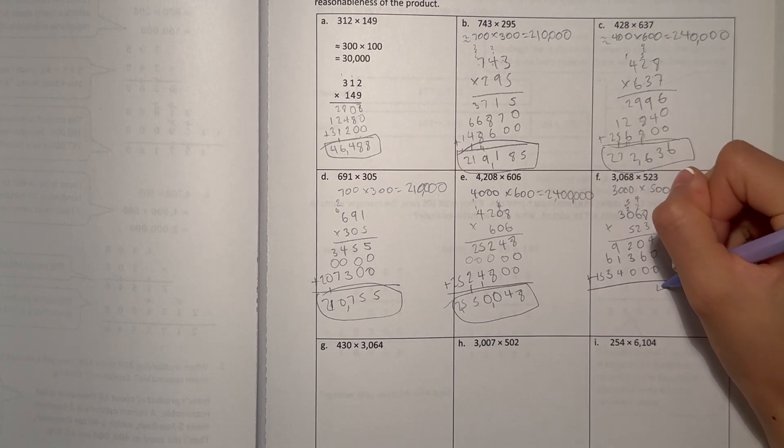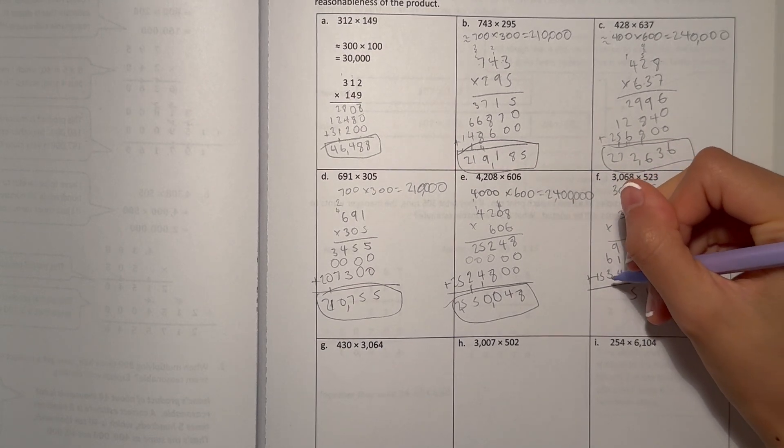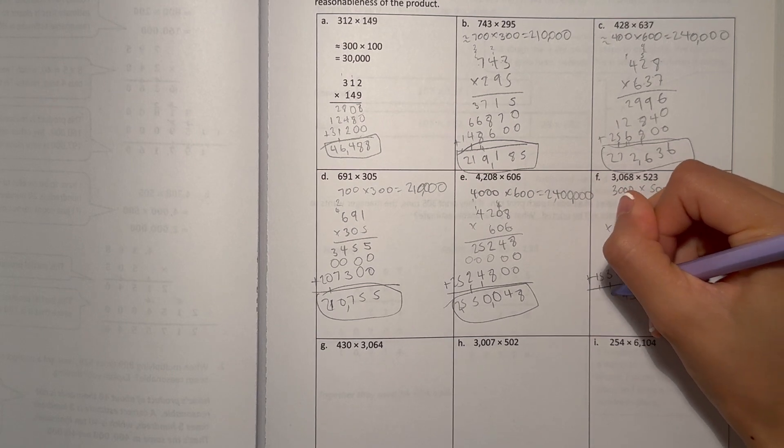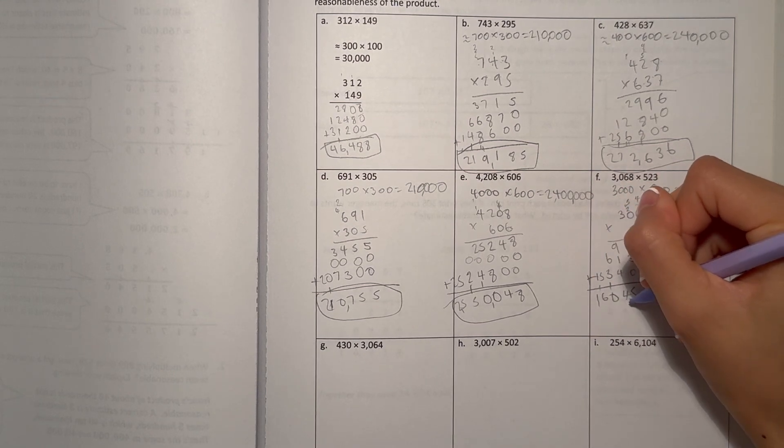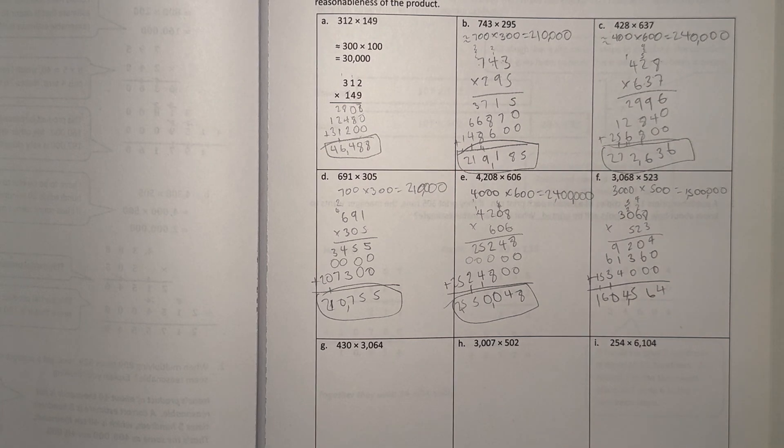So now let's add. 4, 6, 4, 6. 1,604,564. So I say our answer is reasonable because it's pretty close to our estimate. So yeah, it's reasonable.